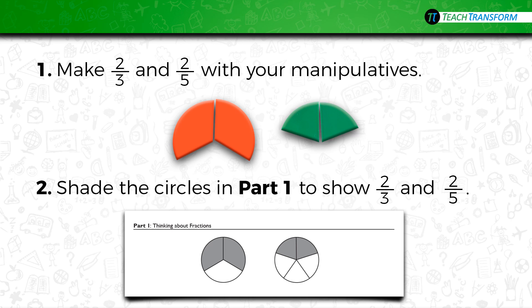Now let's look at your fraction models again. Remove pieces from your wholes so that you have two-thirds and two-fifths showing, and then go back to the circles that you partitioned in part one and shade them so that you have two-fifths and two-thirds shaded. Pause the video while you're doing these two things.